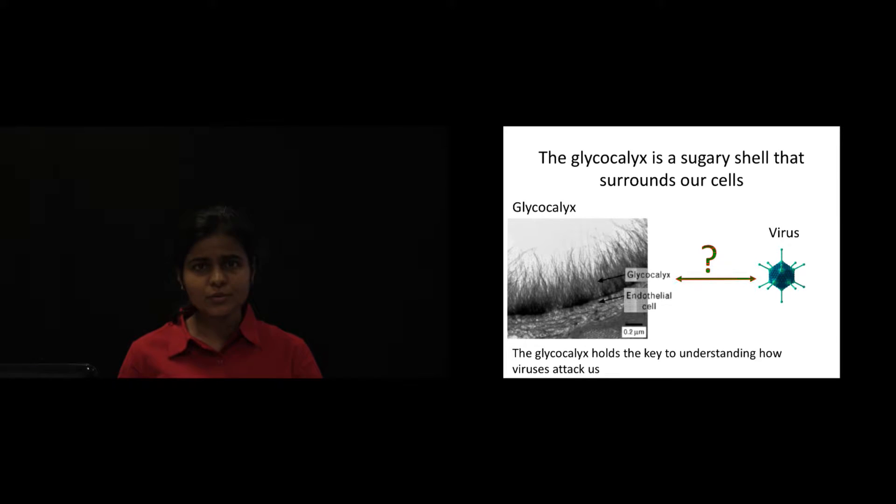Typically, scientists do this by growing cells in the lab and examining the glycocalyx as it is found in the body. But this is very hard because the glycocalyx collapses when you take it out of the body and put it under a microscope. So studying the glycocalyx in its natural form is very complicated.